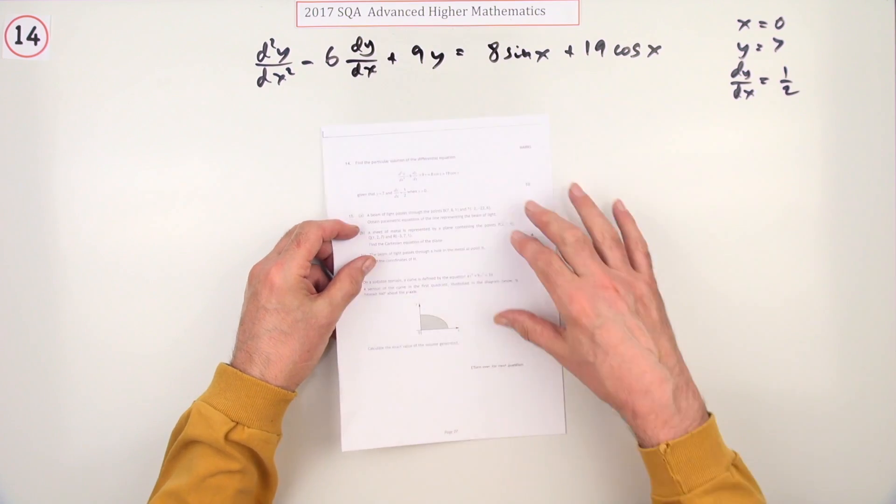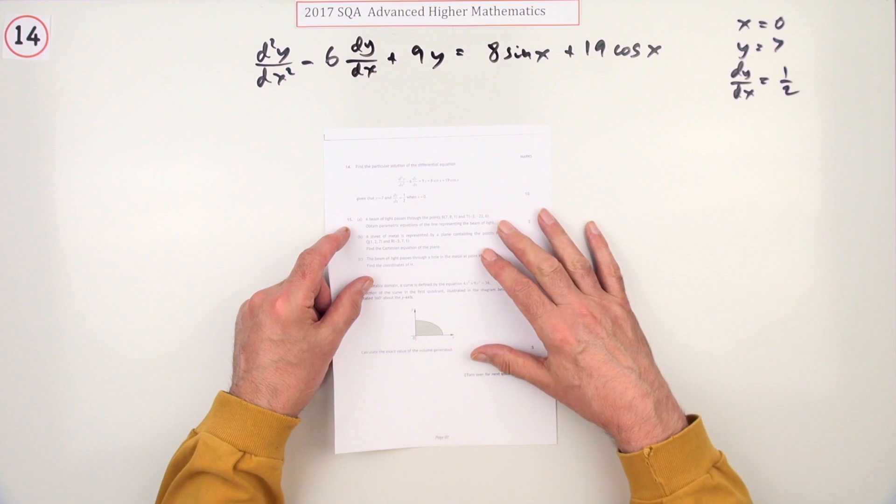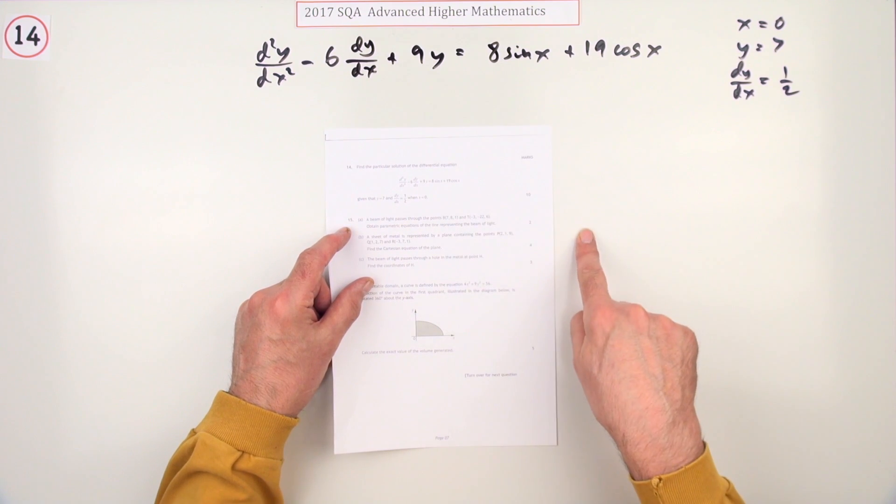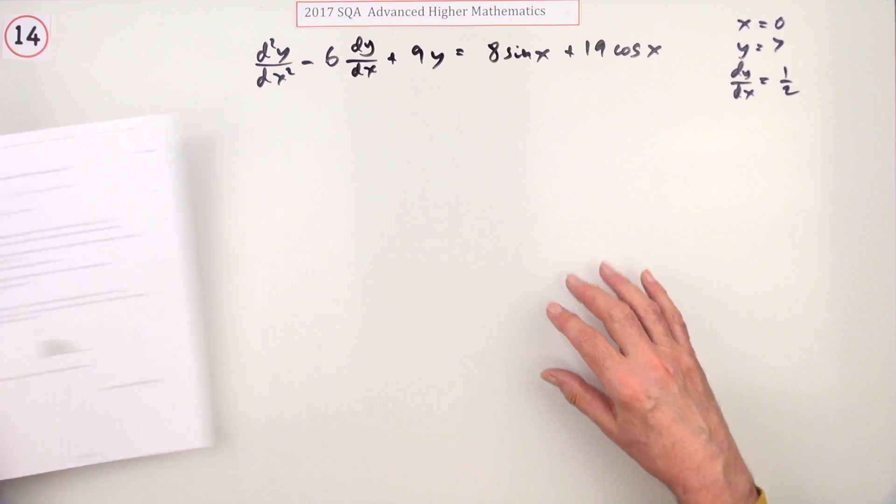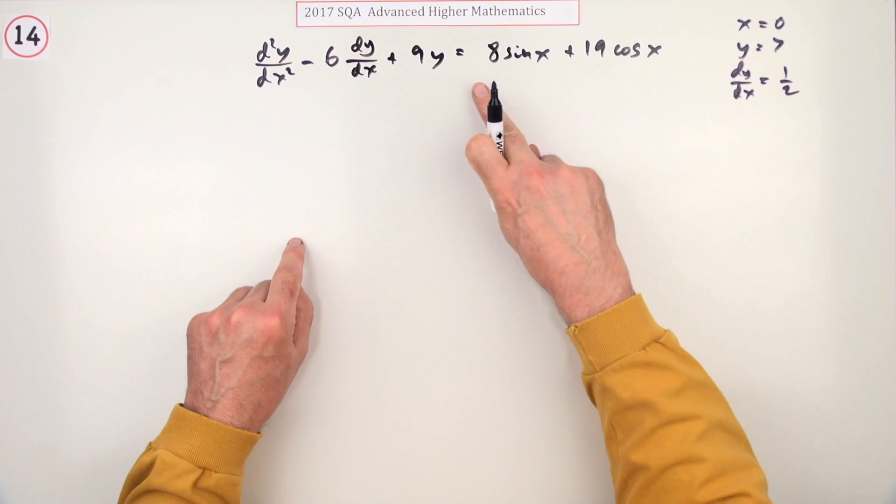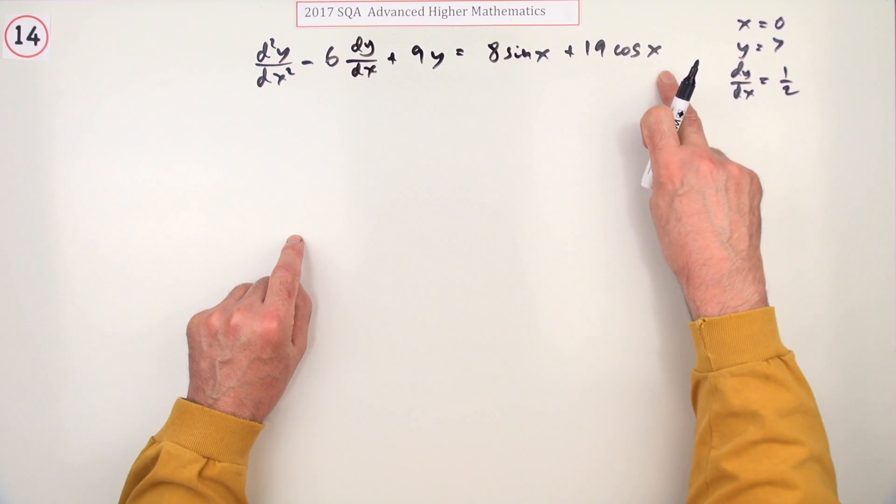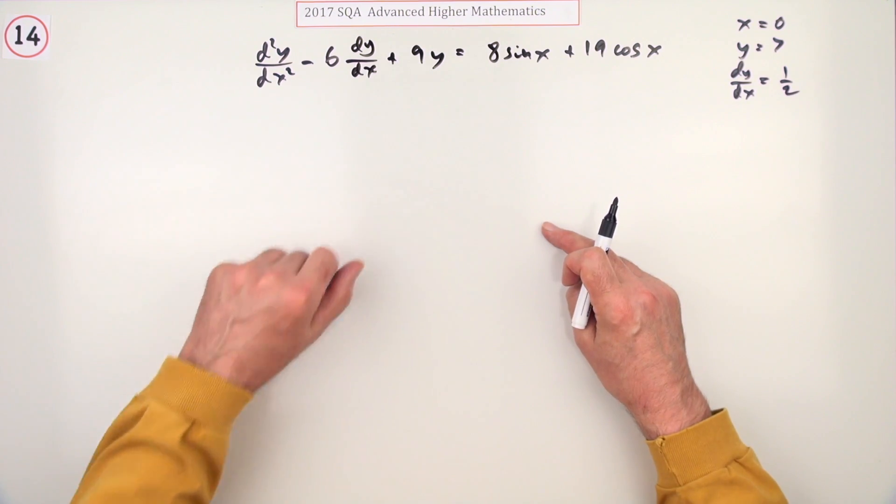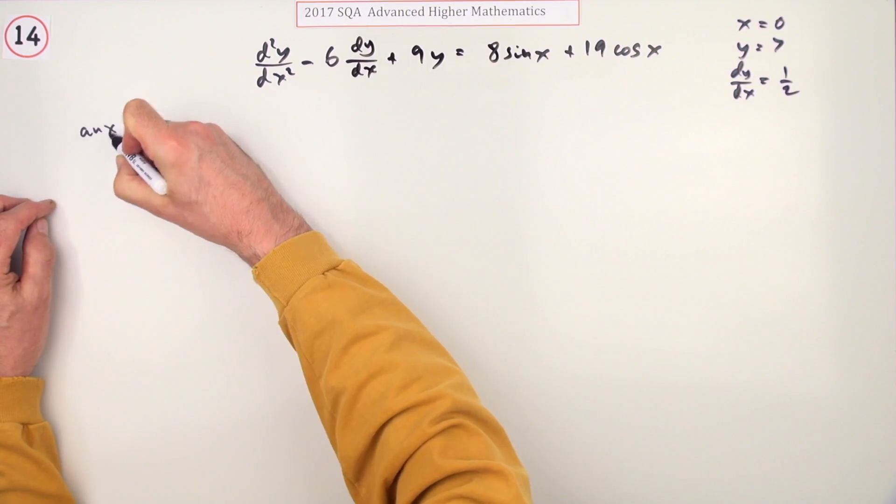Number 14 from the 2017 advanced. This is 10 marks for a second order differential equation all the way through to the particular solution because you've got these initial values. There's a scary bit here - you don't want this trig expression if it's going to clash with that one, that would be a real pest.